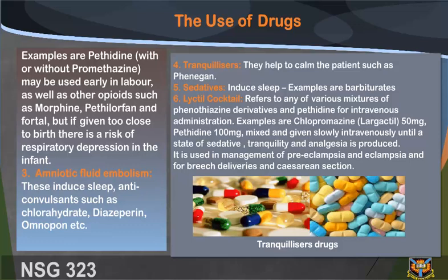But if given too close to birth, there is a risk of respiratory depression in the infant. 3. Sedatives: these induce sleep. Anticonvulsants such as chloral hydrate, diazepam, omnopon, etc. 4. Tranquillizers: they help to calm the patient, such as phenergan. 5. Sedatives — induced sleep; examples are barbiturates.